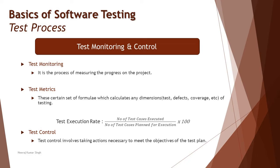In order to understand this stage — test monitoring and control — let's quickly recall some things from our previous tutorial on test planning. One of the activities under test planning was to select the matrices for monitoring and control. Here we'll be talking about three major terminologies: monitoring, matrices, and control — which are in fact independent activities.